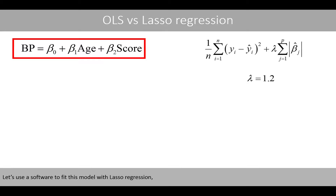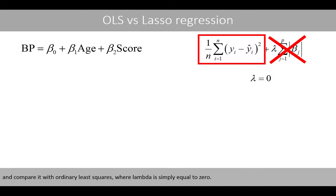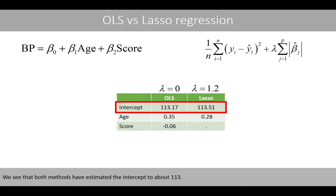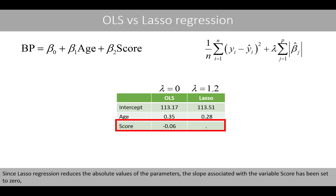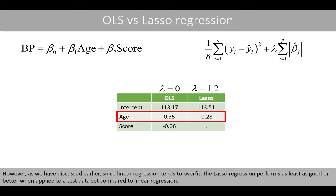Let's use the software to fit this model with LASSO regression, where lambda is arbitrarily set to 1.2, and compare it with ordinary least squares, where lambda is simply equal to zero. These are the estimated parameters of the two different methods. Note that the coefficients have been unstandardized so that they fit the original data. We see that both methods have estimated the intercept to about 113. Since LASSO regression reduces the absolute values of the parameters, the slope associated with the variable score has been set to zero, and the slope associated with age has been reduced from 0.35 to 0.18. This reduction leads to the model no longer fitting as well to the training data as the linear regression model. However, since linear regression tends to overfit, LASSO regression performs at least as good or better when applied to a test dataset.